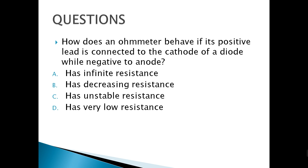How does an ohmmeter behave if its positive lead is connected to the cathode of a diode and negative to the anode? With cathode at positive and anode at negative, that is reverse bias. For a reverse-biased diode, we expect a very high or infinite resistance reading.